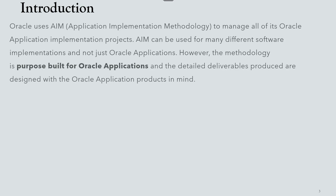Oracle AIM methodology encompasses a project management methodology with documentation templates that support the life cycle of an implementation. The life cycle methodology and documentation templates make AIM a very useful tool for managing implementation projects successfully. There is also another methodology called OUM — Oracle Unified Method — which is based on the waterfall model and the spiral model. In this video, I will focus on AIM.